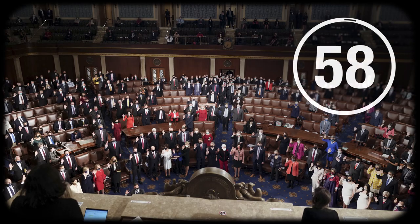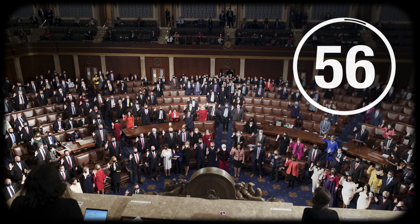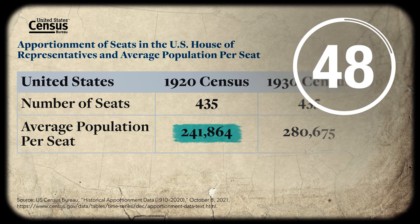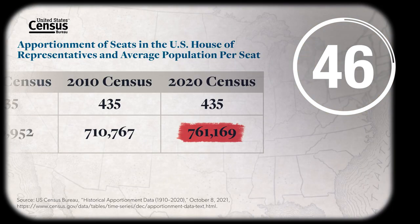Why are there exactly 435 members of the House of Representatives? It's not set by the Constitution, but the Permanent Apportionment Act of 1929. Back then, there were fewer than 250,000 people per district. Today, there are nearly three-quarters of a million.